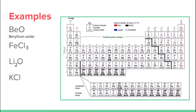Now iron and chlorine: chlorine has a charge of negative one, but in this compound there are three of them. Three times negative one is negative three, so this part of the compound has a charge of negative three. One iron balances that entirely, meaning iron's charge here is positive three. So it'll be iron(III) chloride.